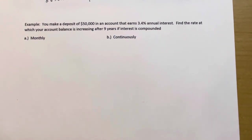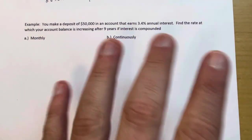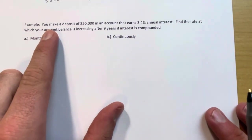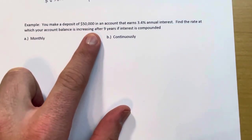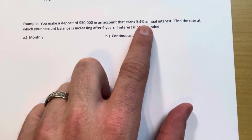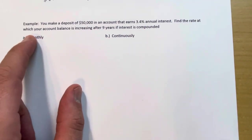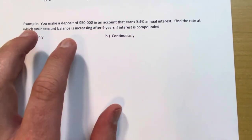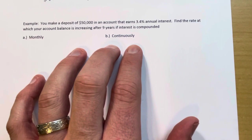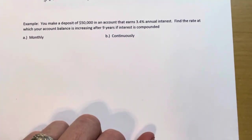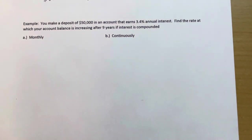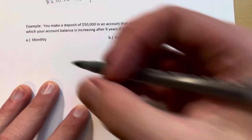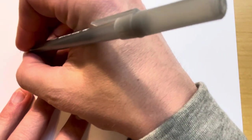Let's look at an example we haven't really dealt with since the beginning of this course: compound interest. We can make sense of derivatives in a problem like this. We make a deposit of $50,000 in an account that earns 3.4% annual interest, and we want to find the rate at which our account balance is increasing after nine years, for both monthly and continuous compounding.